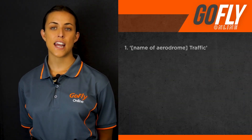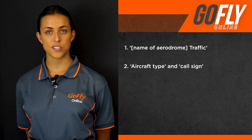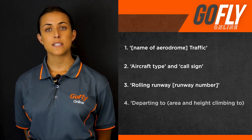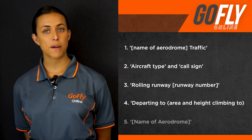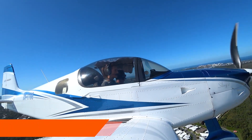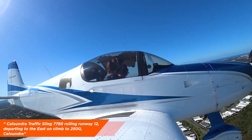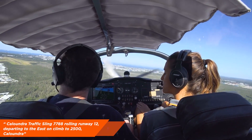If you were departing, the call would include the name of the aerodrome, followed by traffic, aircraft type and call sign, rolling runway with the runway number, departing to the area and height climbing to, followed by the name of the aerodrome. An example of this might be: Caloundra traffic, Sling 7788, rolling runway 12, departing to the east, climbing to 2,500, Caloundra.